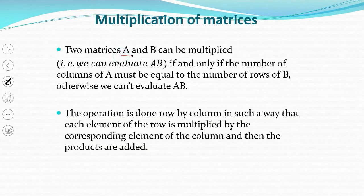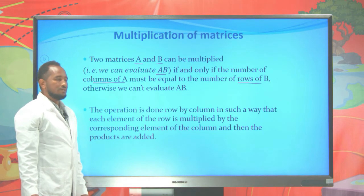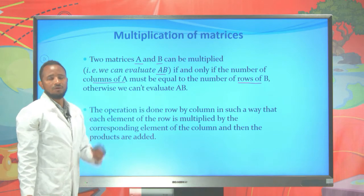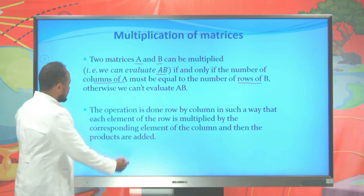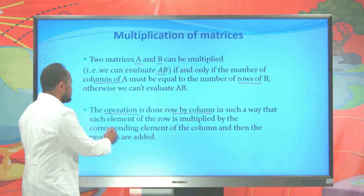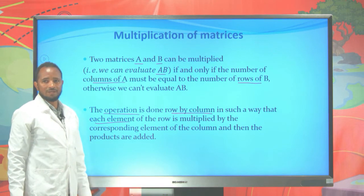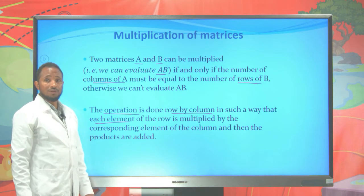Two matrices A and B can be multiplied — we evaluate the product AB — if and only if the number of columns of A is equal to the number of rows of B. If this condition is not met, we cannot multiply AB. The operation is done row by column, such that each element of the row is multiplied by the corresponding element of the column and then the products are added.